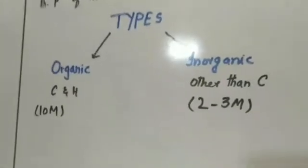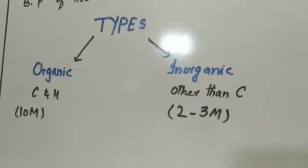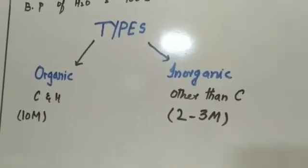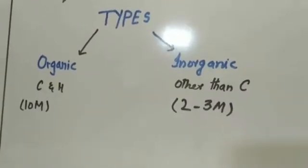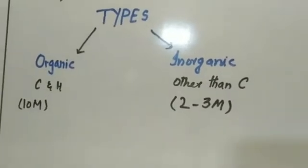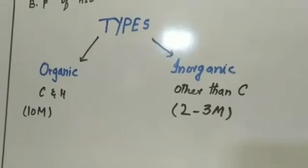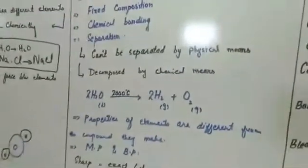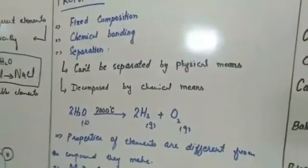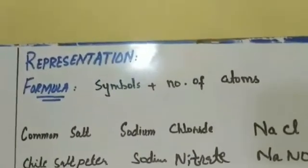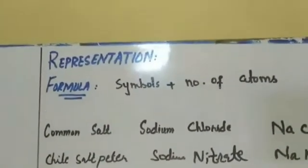Now we move to the types of compounds. There are two major types: organic compounds and inorganic compounds. Organic compounds are compounds of carbon and hydrogen, while inorganic compounds are compounds of elements other than carbon. There are about 10 million organic compounds, while inorganic compounds number about 2 to 3 million. Organic compounds are usually obtained from living organisms, while inorganic compounds are obtained from non-living things.